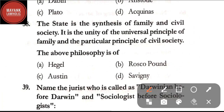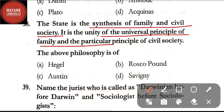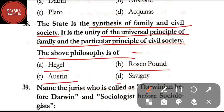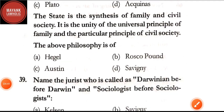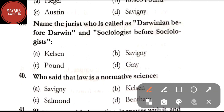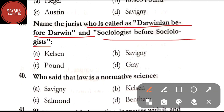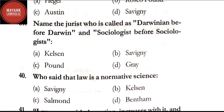Question number 38: 'The state is the synthesis of family and civil society — the unity of the universal principle of family and the particular principle of civil society.' This philosophy is of — option A: Hegel; option B: Roscoe Pound; option C: Austin; option D: Savigny. The correct answer is option A, Hegel. Question number 39: name the jurist who is called as 'Darwinian before Darwin and sociologist before sociologist' — option A: Kelsen; option B: Savigny; option C: Pound; option D: Gray. The correct answer is option B, Savigny.